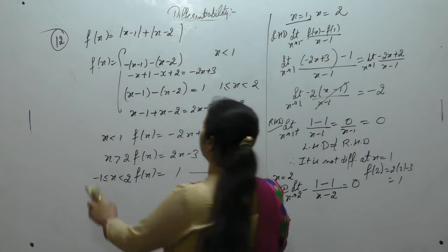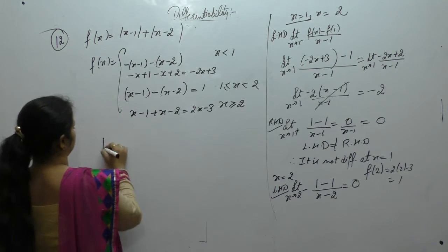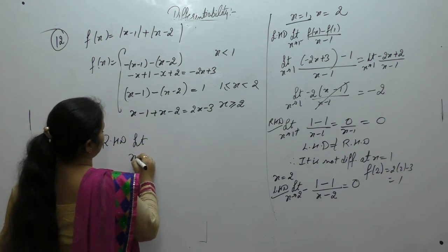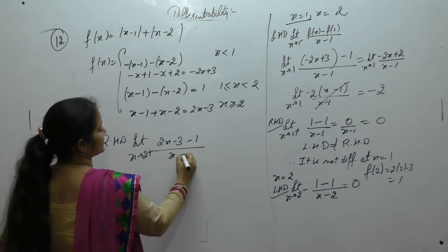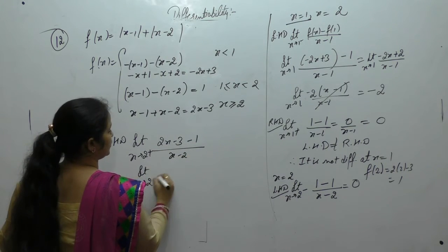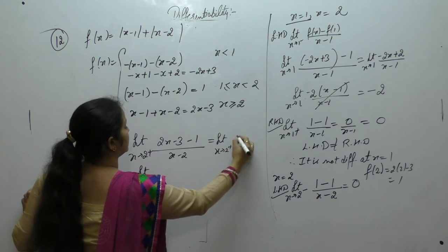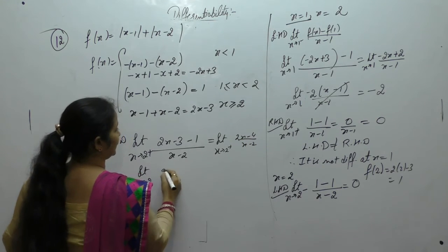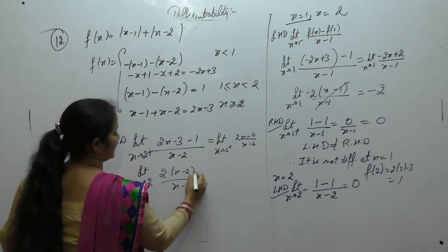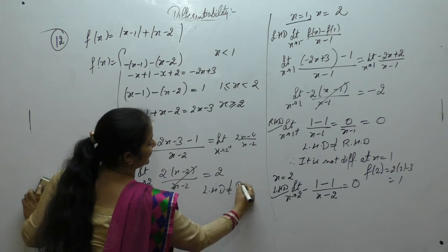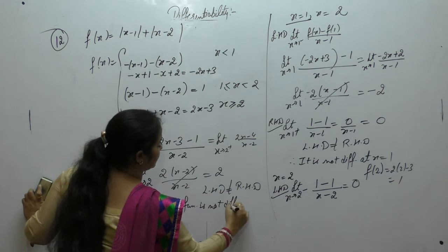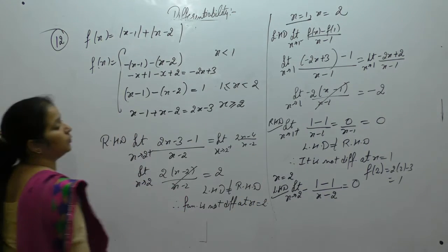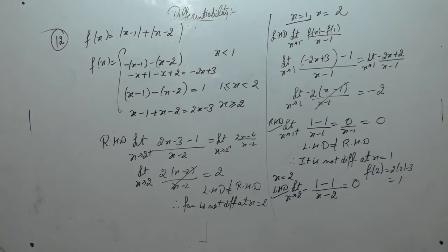That gives 0. Now the right hand derivative: limit x tends to 2 positive. When x > 2, the function has value 2x − 3, and f(2) = 1. So (2x − 3 − 1) / (x − 2) = (2x − 4) / (x − 2). Taking 2 common: 2(x − 2) / (x − 2) = 2. Left hand derivative (0) is not equal to right hand derivative (2), so the function is not differentiable at x = 2. Therefore f is not differentiable at x = 1 and x = 2.